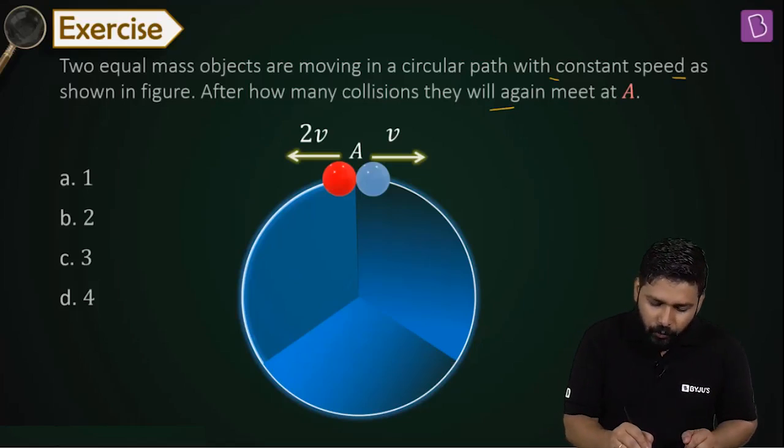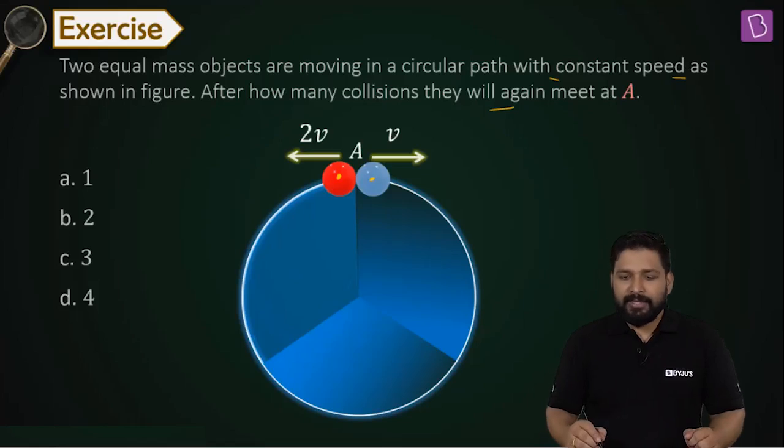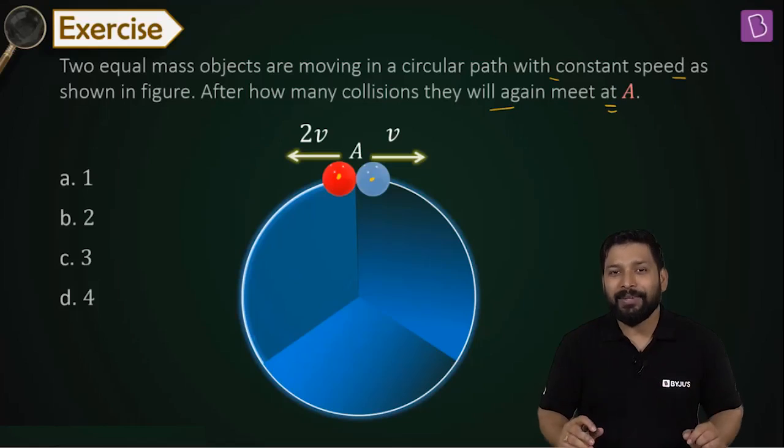The question is that when they come back at point A, when they meet again at point A, before they meet, how many times have they collided? How many times has the collision happened?